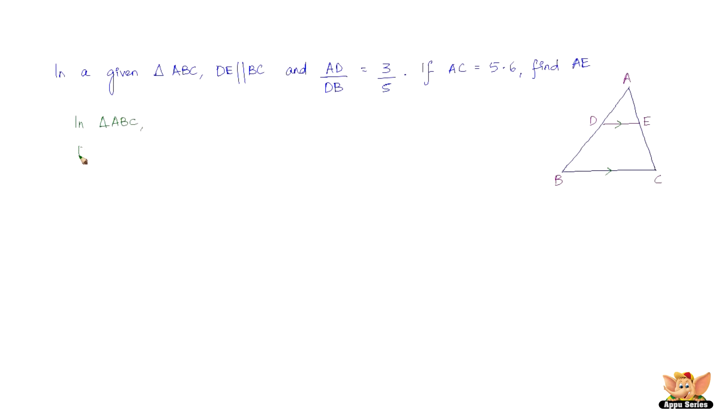We have DE parallel to BC. Given here. That's a given data. So, as a result of DE being parallel to BC, we have AD/DB = AE/EC. This is by the basic proportionality theorem.